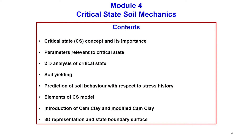The last module, Module 4, is the most important module of this course. It covers critical state soil mechanics. The contents include the critical state concept and its importance, parameters relevant to critical state, 2D analysis of critical state soil yielding, and prediction of soil behaviour with respect to stress history — connecting to what was discussed in Module 2 but now within the critical state framework. Then we cover the different elements of critical state models, introduction to Cam Clay and Modified Cam Clay at an introductory level, and finally the three-dimensional representation and state boundary surface based on the critical state model.